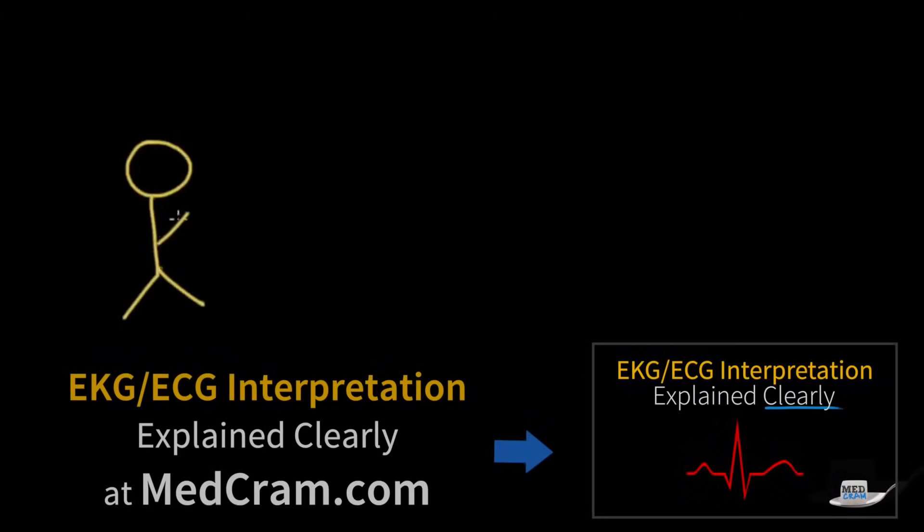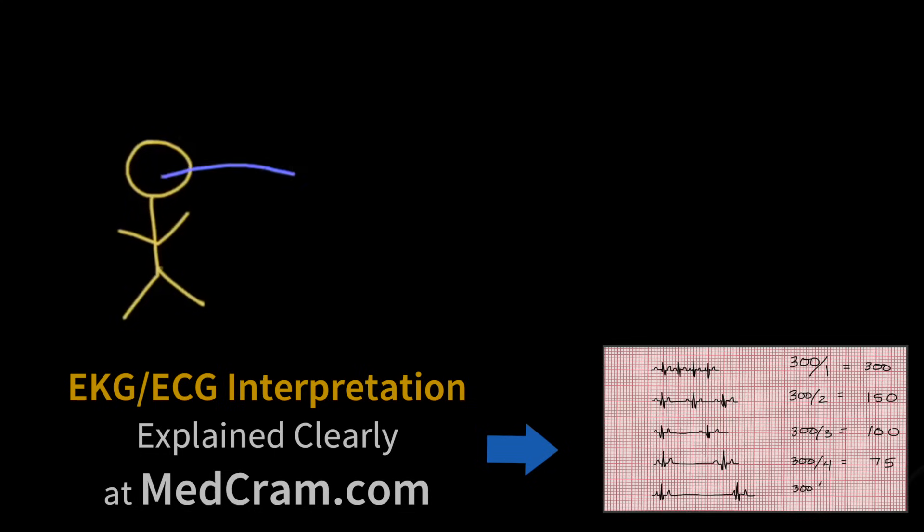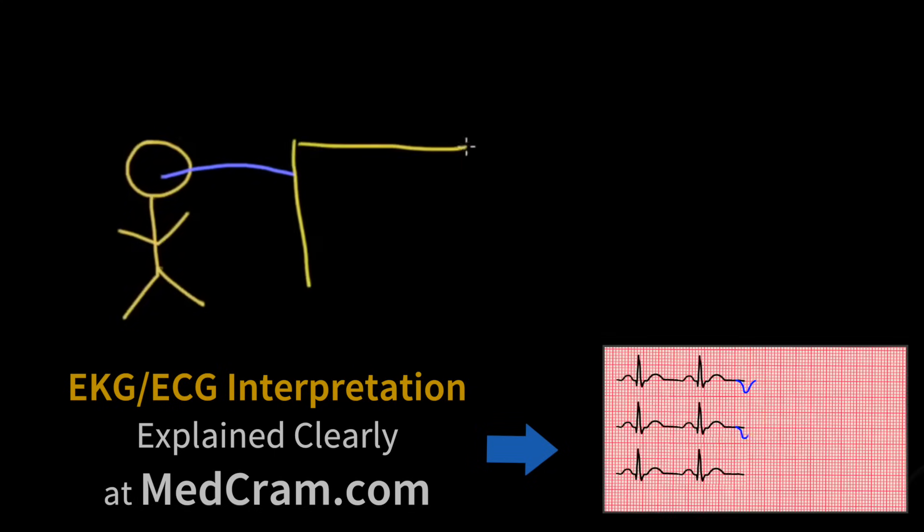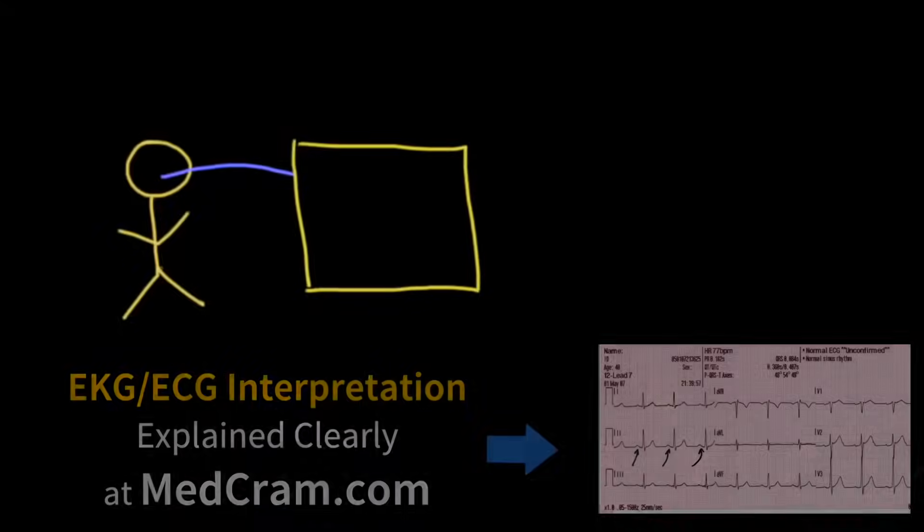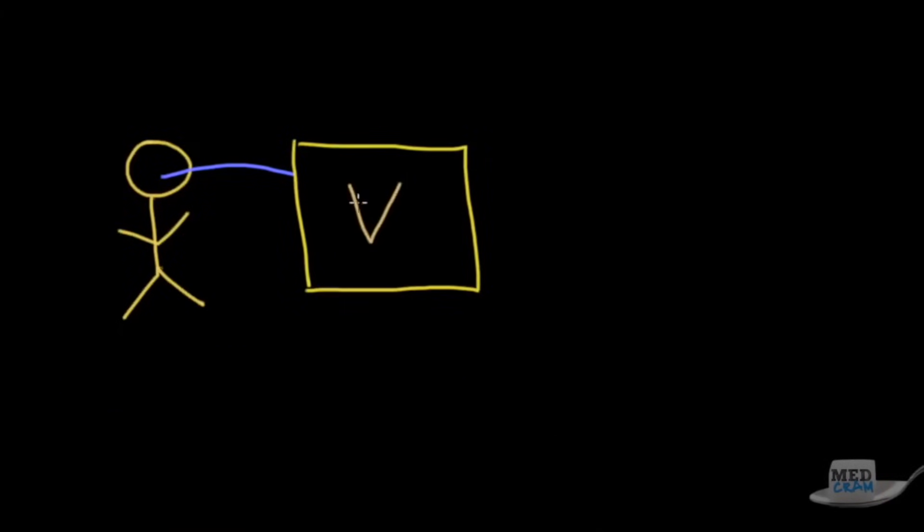Going back to our patient again, we've got our endotracheal tube, we've got our ventilator. The purpose of the ventilator is to maintain homeostasis between the two gas concentrations that we're talking about here, which is carbon dioxide and oxygen. Oxygen is being put into the patient and carbon dioxide is coming out, and for the most part we want to keep those close to normal. There's some exceptions to that.